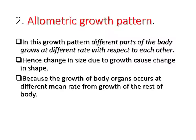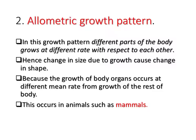Because the growth of the body organs occurs at different rates from the growth of the rest of the body, there is a change in shape of the organism as it grows. This type of growth pattern occurs in animals such as mammals. During the growth of mammals like a human being, there is a change in shape because each organ grows at a different rate compared to other organs.